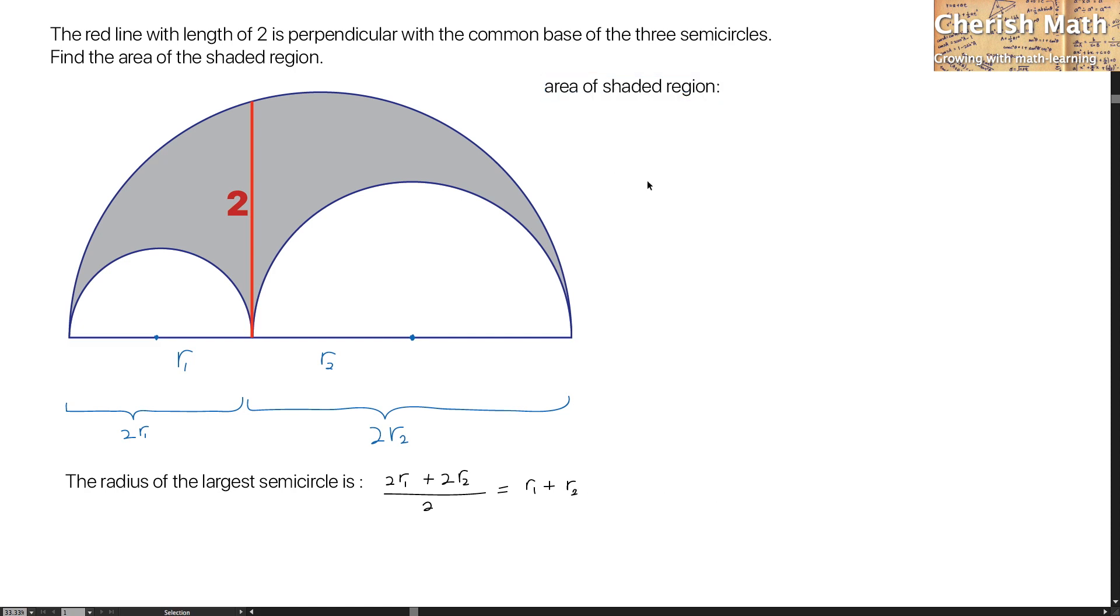For the area of the shaded region, I'm going to use the entire area of the largest semicircle minus the 2 white spaces of the smallest and the middle semicircles. Let me expand the equation here.